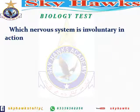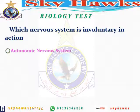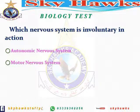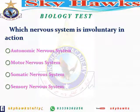Next question: which nervous system is involuntary in action? Options are: autonomic nervous system, motor nervous system, somatic nervous system, sensory nervous system. Involuntary means it works on its own — 'auto' means self. The correct answer is the autonomic nervous system.